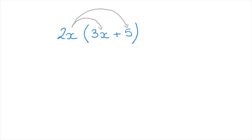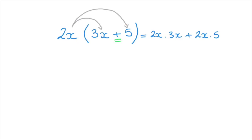So we can state that this equals 2x times 3x, where we've distributed the 2x to the first term inside the parentheses. Since the operation between the two terms is addition, we write plus 2x times 5, where we've distributed the 2x to the second term inside the parentheses. Now we need to rearrange and simplify this as much as possible.